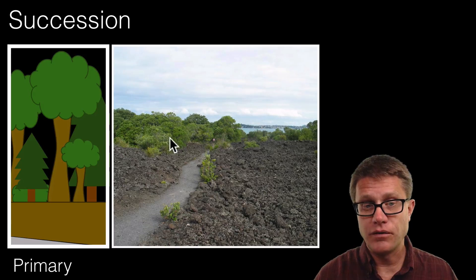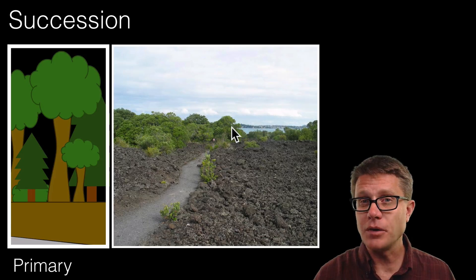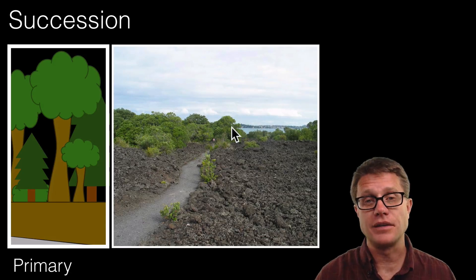But you can see it taking place right here. This is a lava flow. And over time soil is going to start to form. And then life is going to move back into that area. This is primary succession because all that is left is the rock.